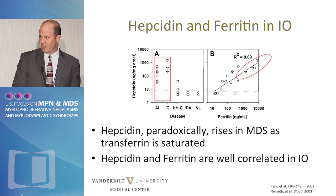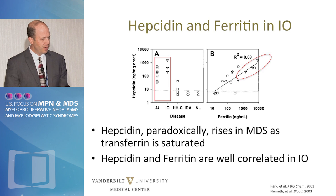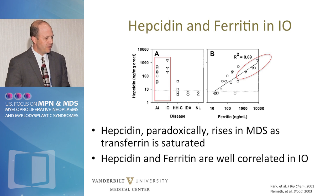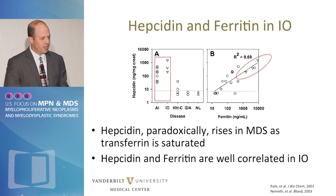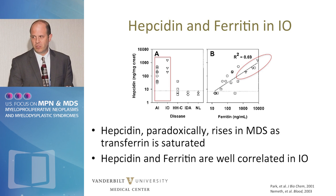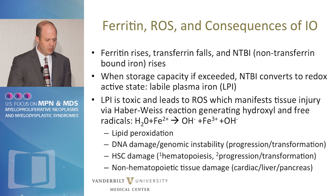As Tom Ganz first noted about 15 years ago, hepcidin levels are low with most anemias and are paradoxically high in these inflammatory states. In this first assessment, now 15 years ago, it was clear that there was a very strong correlation between ferritin levels and hepcidin levels — though this has been debatable, and I'll get back to that in a moment.